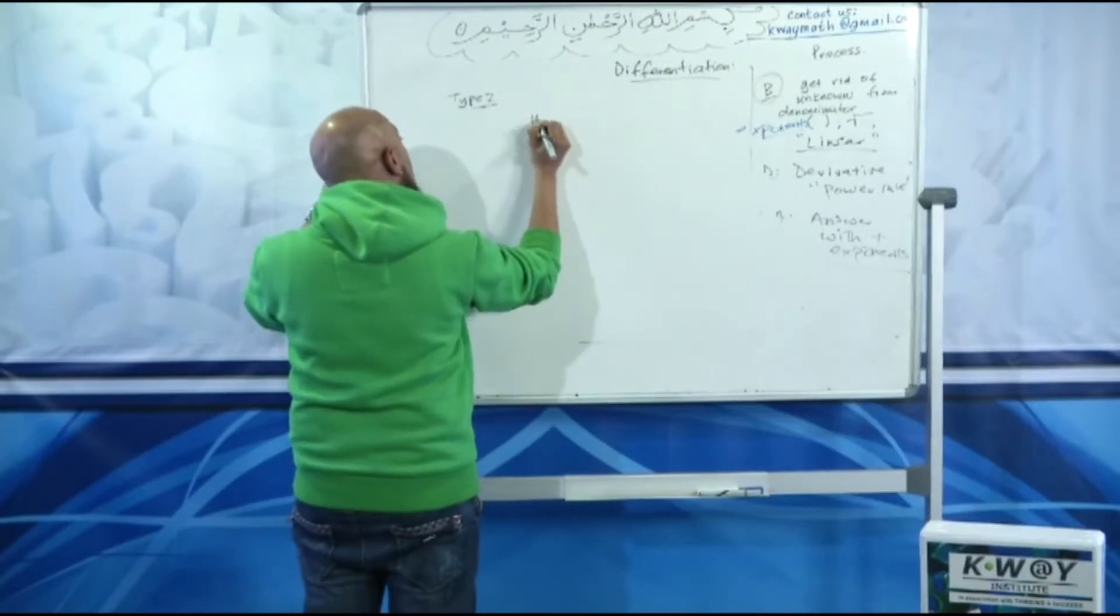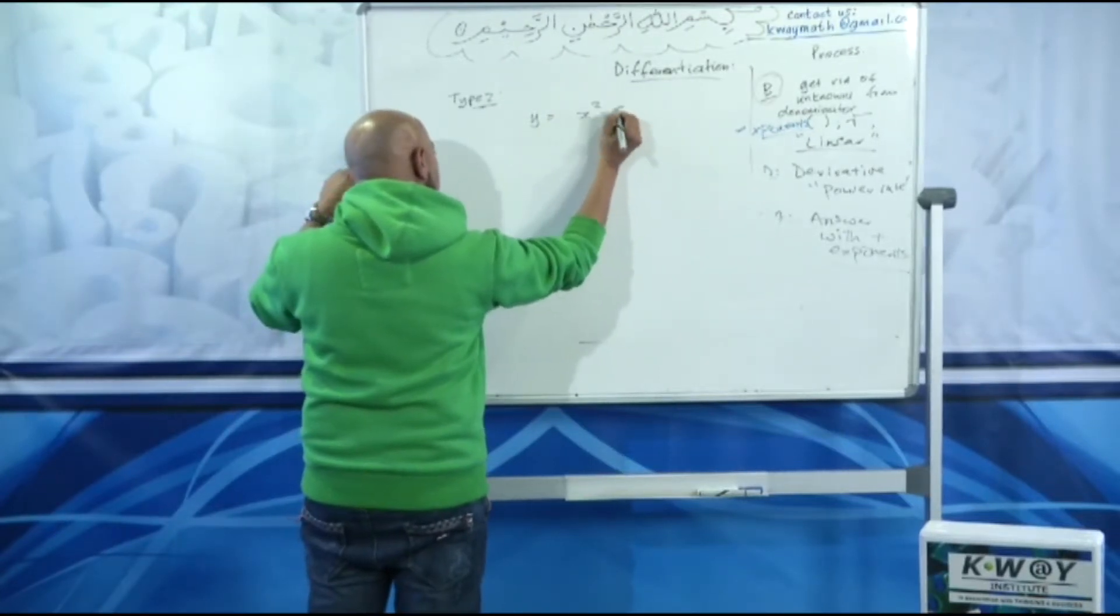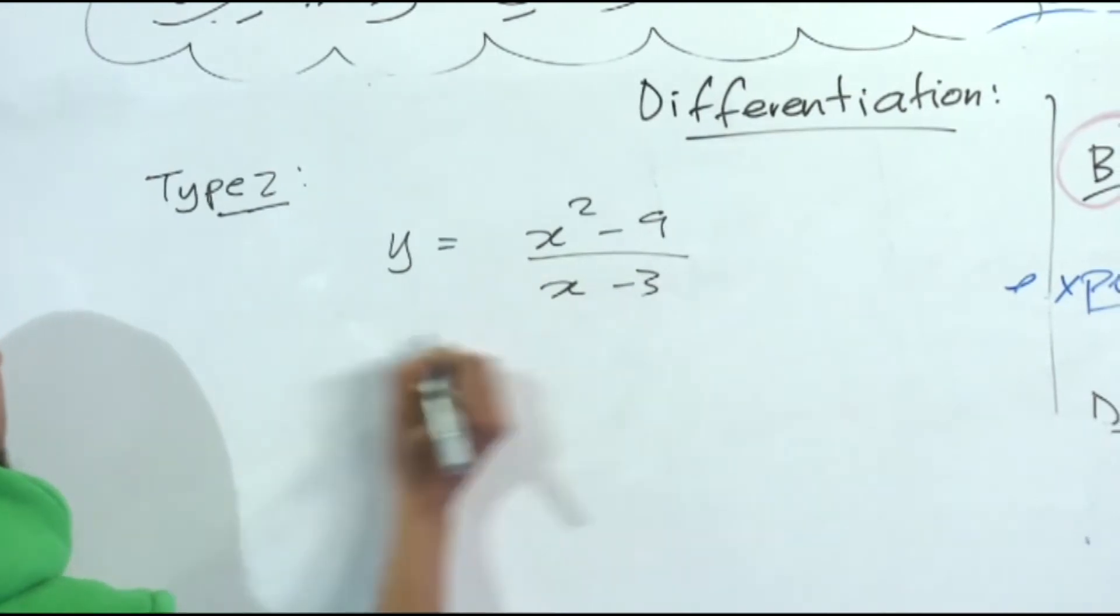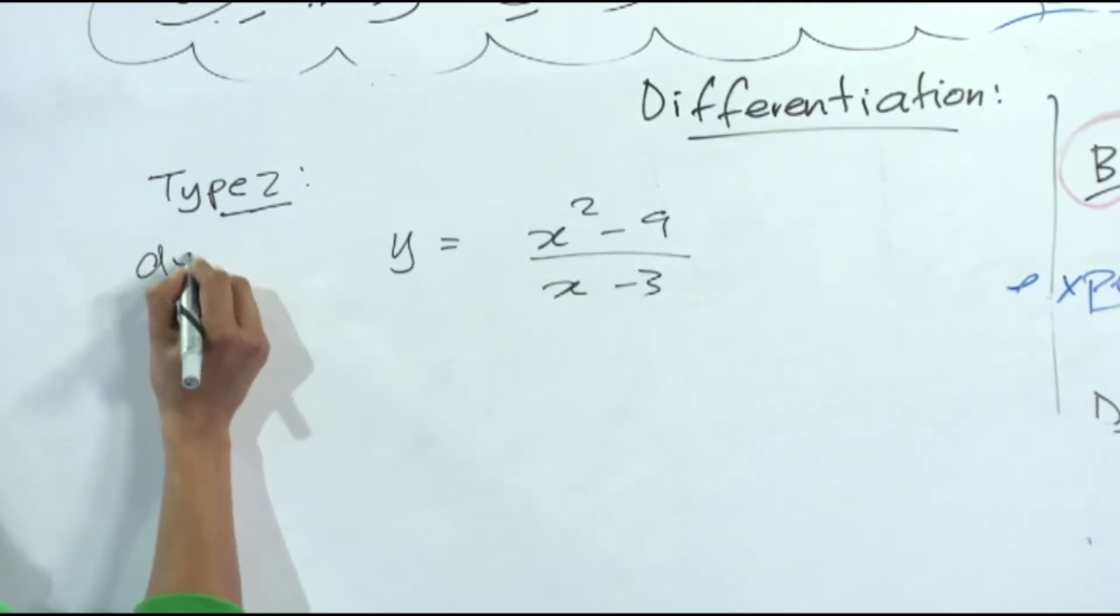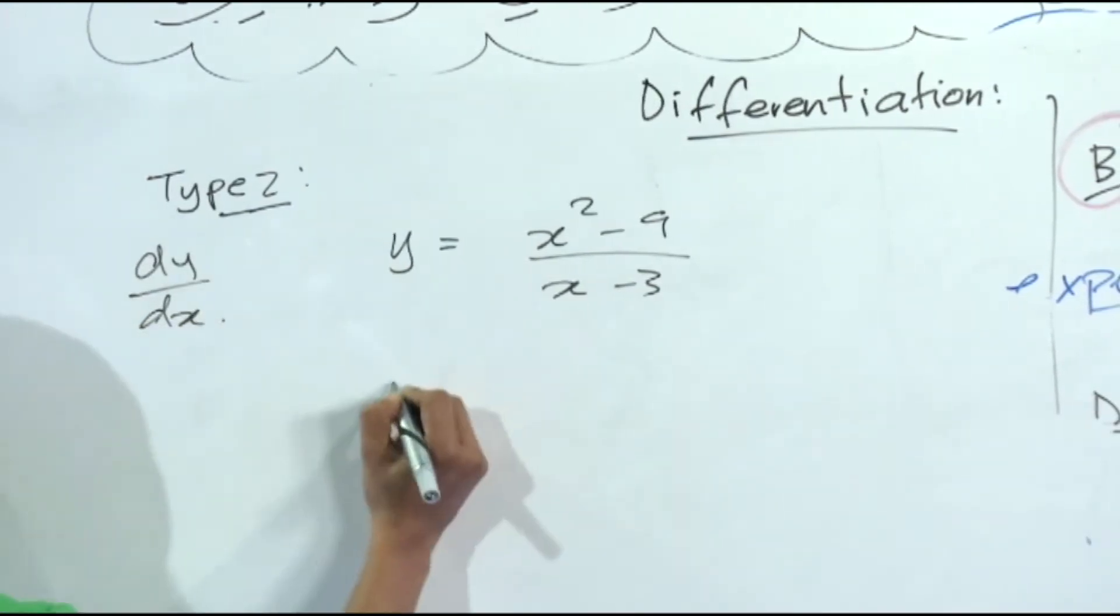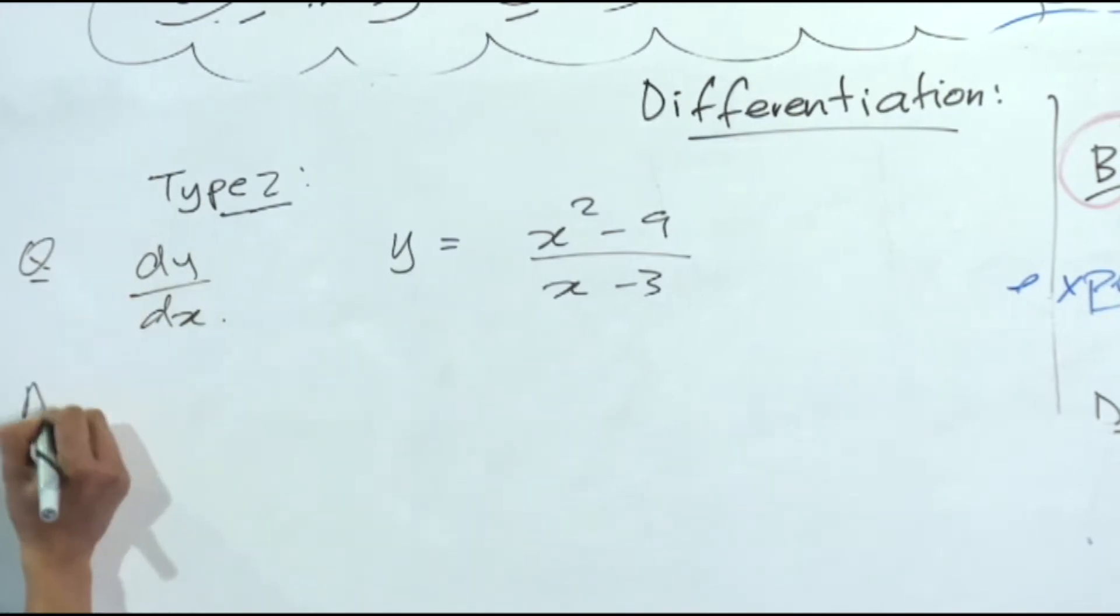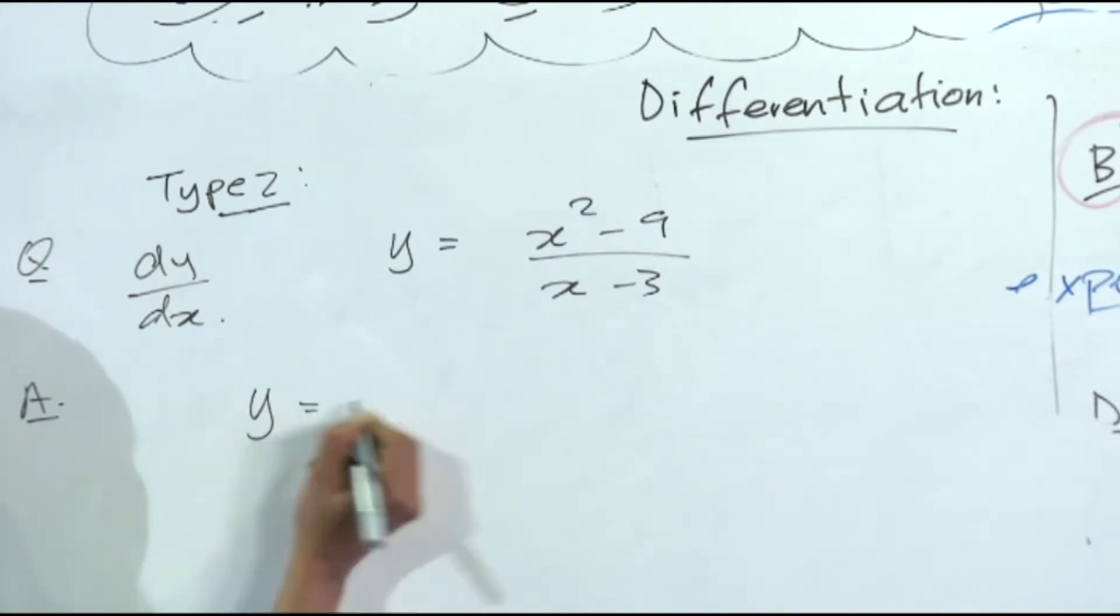Type 2: I tell you y is equal to x squared minus 9 over x minus 3, find dy/dx. The question will just say find dy over dx. In the exam, you're going to say y is equal to...